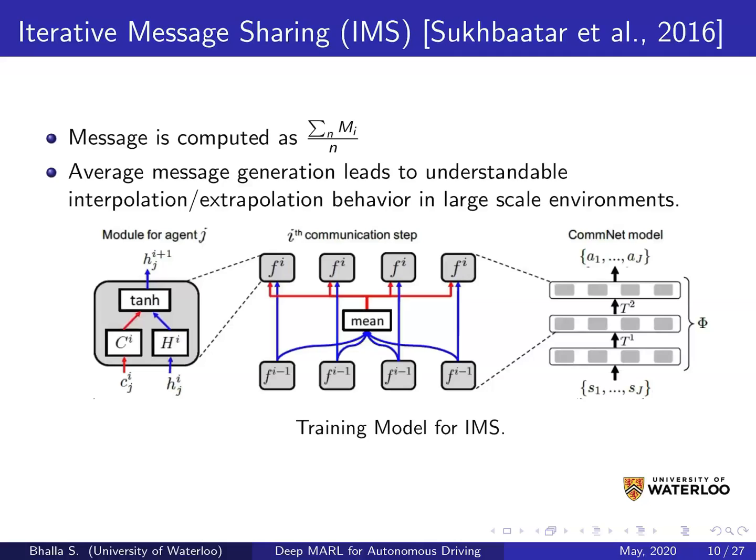The averaging function allows the IMS algorithm to support a variable number of agents training in parallel. However, the downside is that multiple loops of message passing between agents are required before each discrete time step of the environment where an action can be taken.